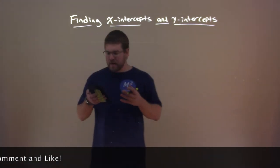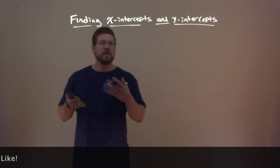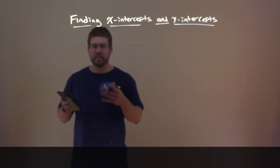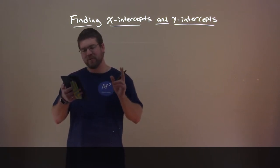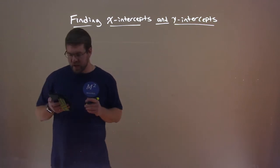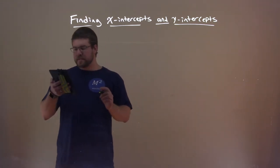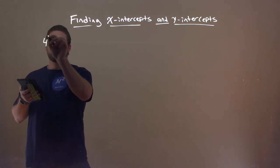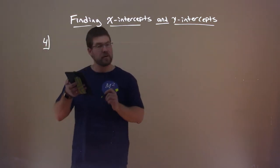So, every line here will have an x and y-intercept. Well, almost every line. If you have a vertical or horizontal line, you won't have both. So, what we want to do, let's say we're given this example, and let's go find the x and y-intercept of it.